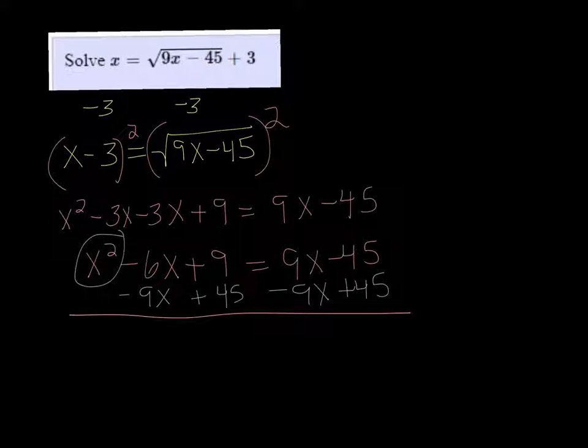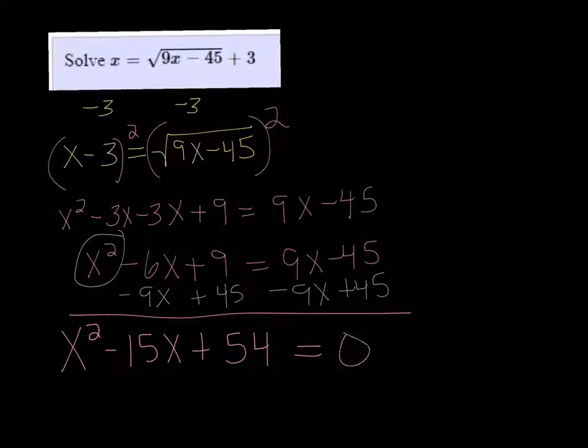All right, so now we get x squared minus 15x plus 54 equals 0. From here, we should be able to factor.